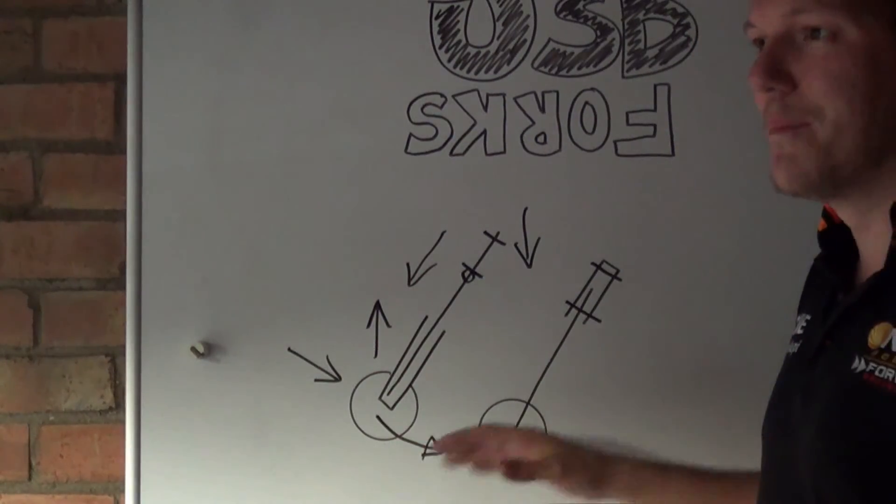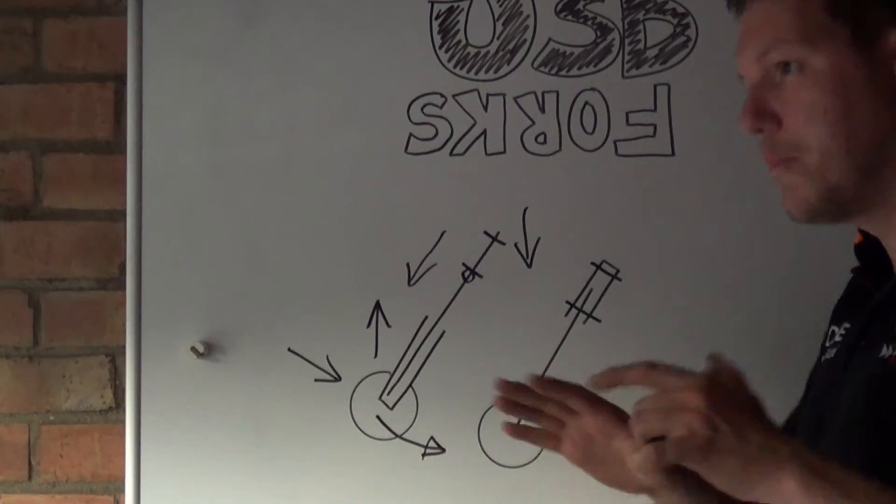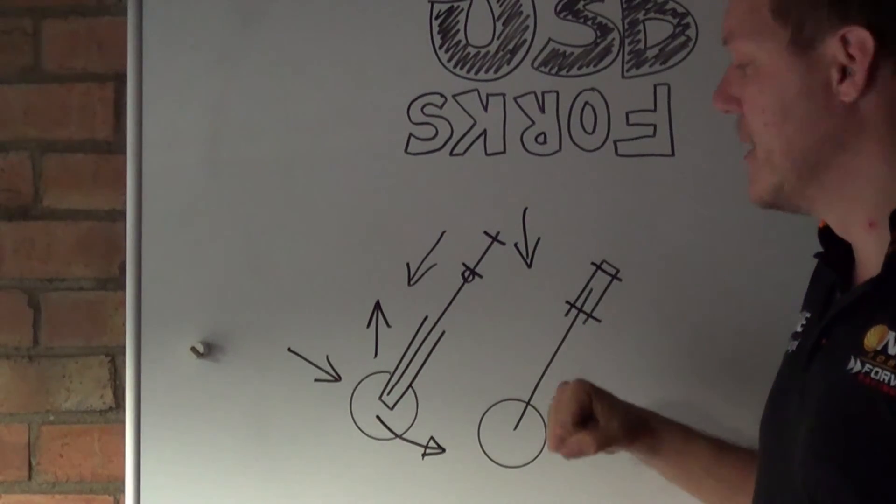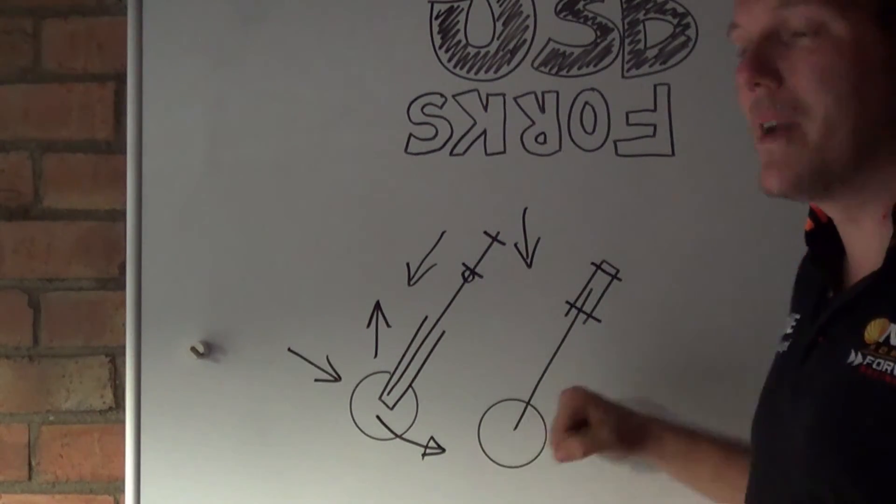So motocross and MotoGP are using upside down forks for two completely different reasons. MotoGP are racing for feel and feedback, and they can actually, when they're designing it out, make it lighter.